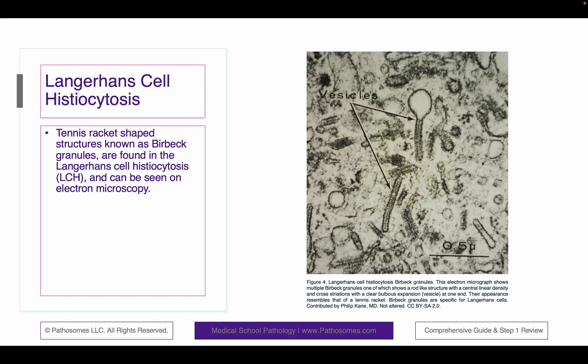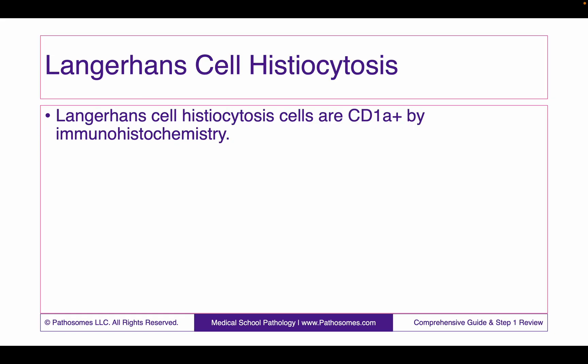At the electron microscopic level, you can see this tennis racket-shaped structure known as a Birbeck granule that is found in Langerhans cell histiocytes, and they can be seen right here in this image. Langerhans cell histiocytosis cells are CD1A positive by immunohistochemistry — you have to know that.